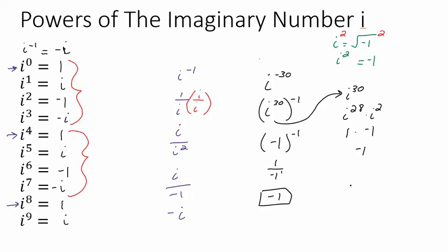You don't see i to the negative exponents too often, but it's good to know how to handle them. The big takeaway is that powers of i repeat in the pattern 1, i, negative 1, negative i. i to any integer power will come out to be one of those four values — it's just a matter of figuring out where the exponent fits into this pattern.